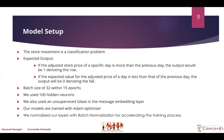We use 100 hidden neurons and an unsupervised GloVe model in the message embedding layer. Our models are trained with an Adam optimizer, and we normalize our layers with batch normalization to accelerate the training process.